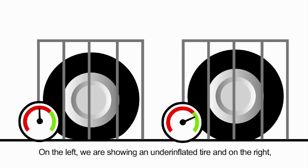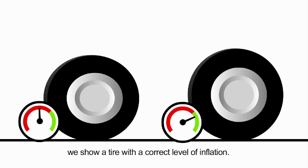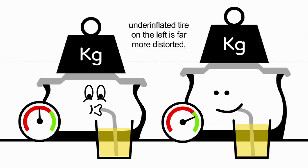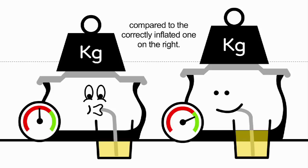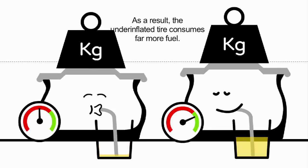On the left, we are showing an under-inflated tire, and on the right, we show a tire with the correct level of inflation. Under the weight of the load being carried, the under-inflated tire on the left is far more distorted compared to the correctly inflated one on the right. As a result, the under-inflated tire consumes more fuel.